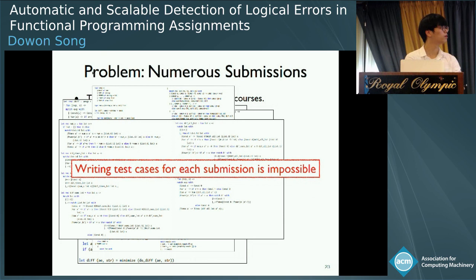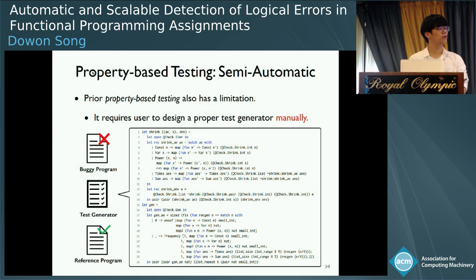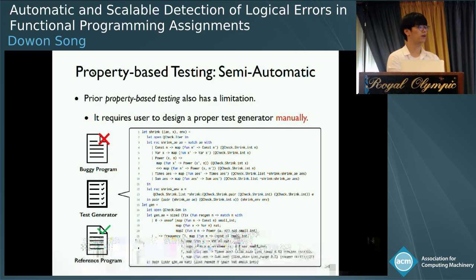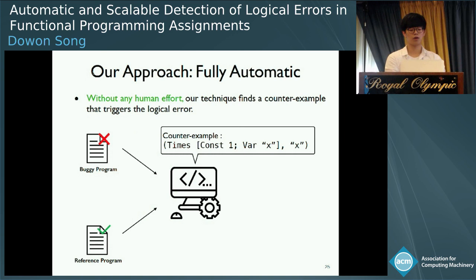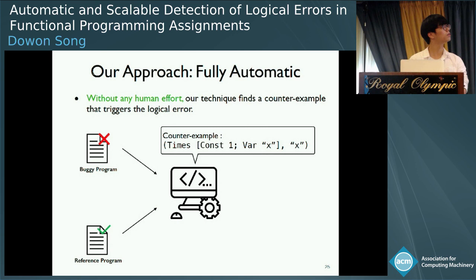To resolve this problem, some prior works have been proposed. To test functional programs, property-based testing is widely used. This technique is very effective, but still has a limitation: it is semi-automatic as it requires human effort. To use it properly, a user must design a test generator and test shrinker manually, and the testing performance heavily depends on them. The code on the right shows the generator and shrinker we used for this problem, and designing them was not easy. Unlike property-based testing, our technique is fully automatic — it takes a buggy program and a reference program only and produces a counter-example.